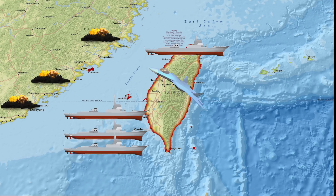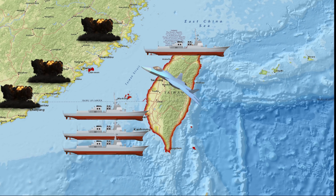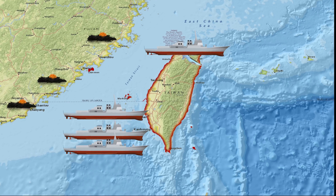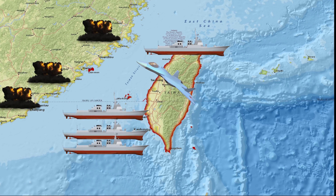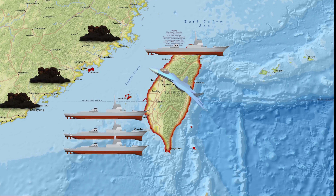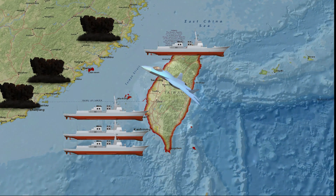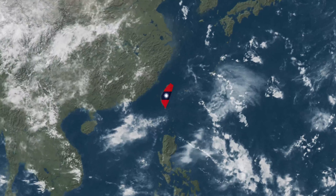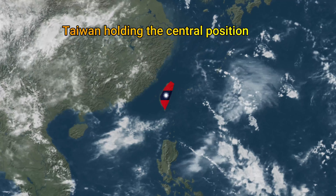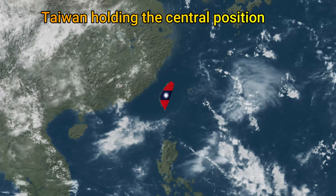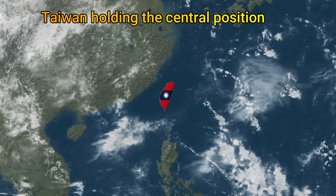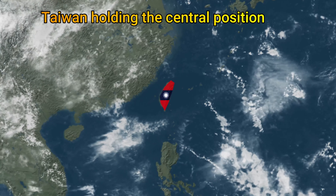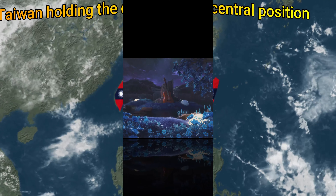Beyond its function as a defense line, the first island chain serves as a crucial maritime boundary, demarcating the East China Sea from the Philippine Sea and the South China Sea from the Sulu Sea. As nations race for influence, the first island chain remains a strategic chess piece with Taiwan holding a central position — its role going beyond military significance to influencing trade, diplomacy, and the delicate balance of power in East Asia.